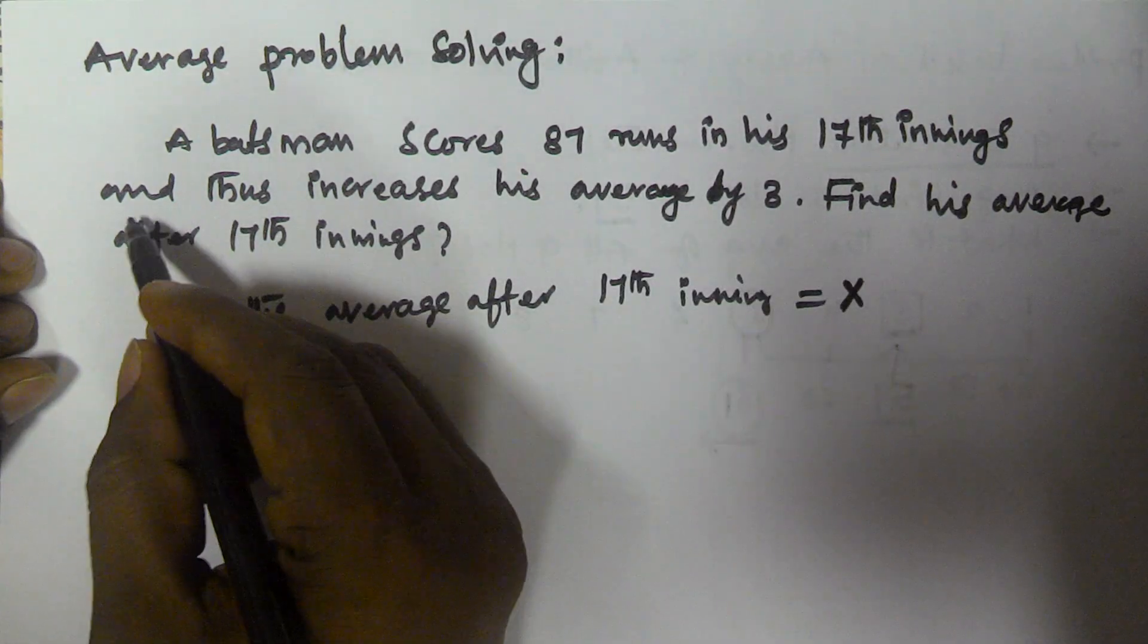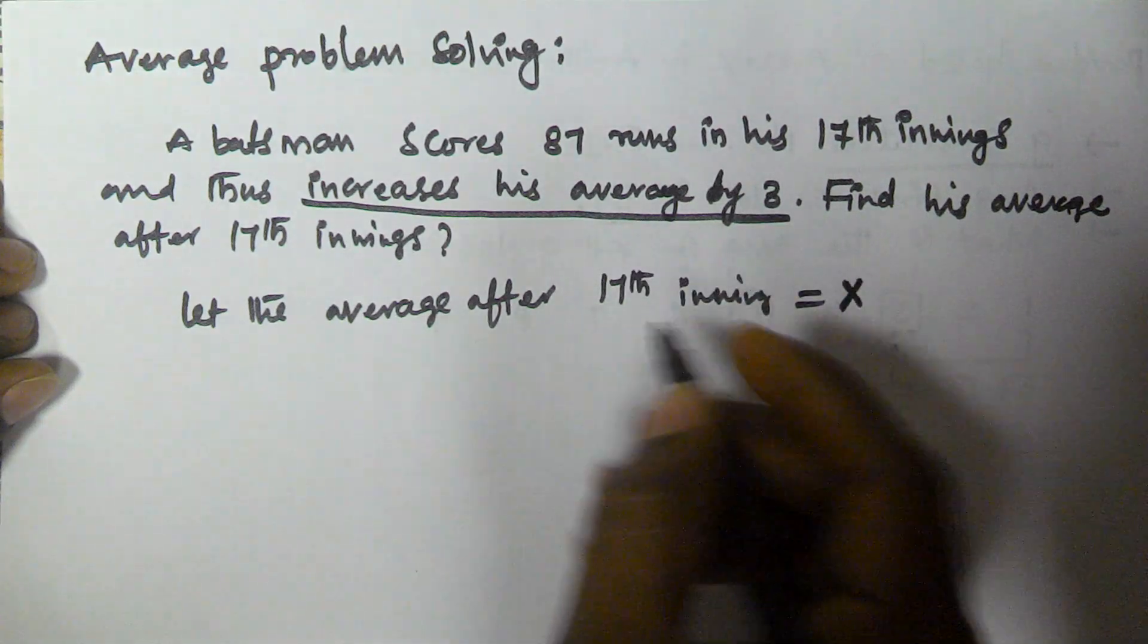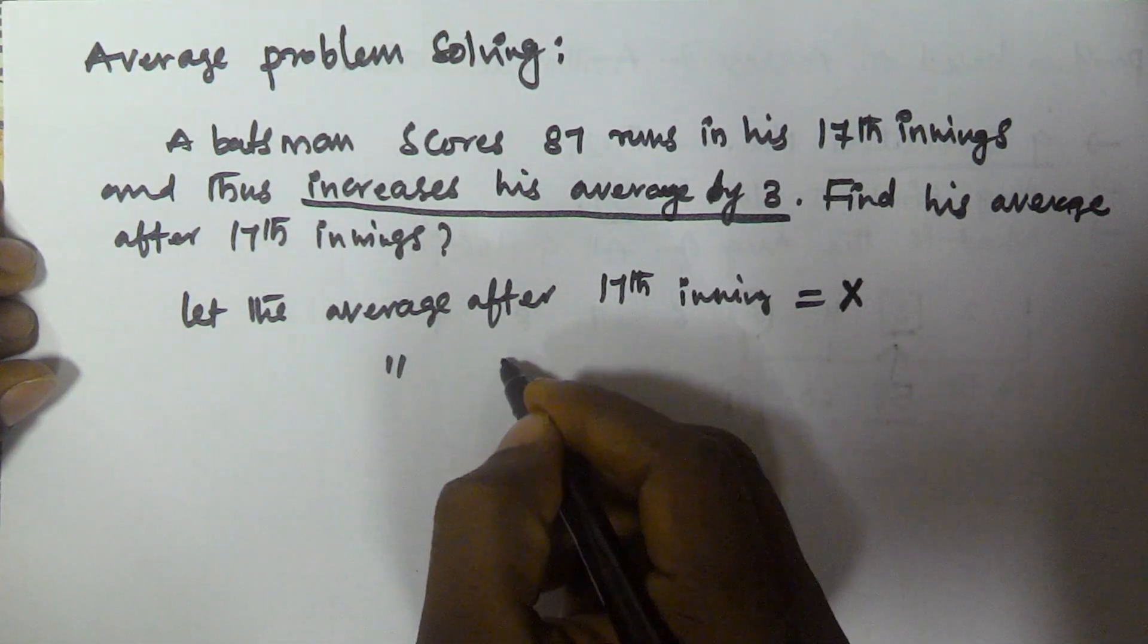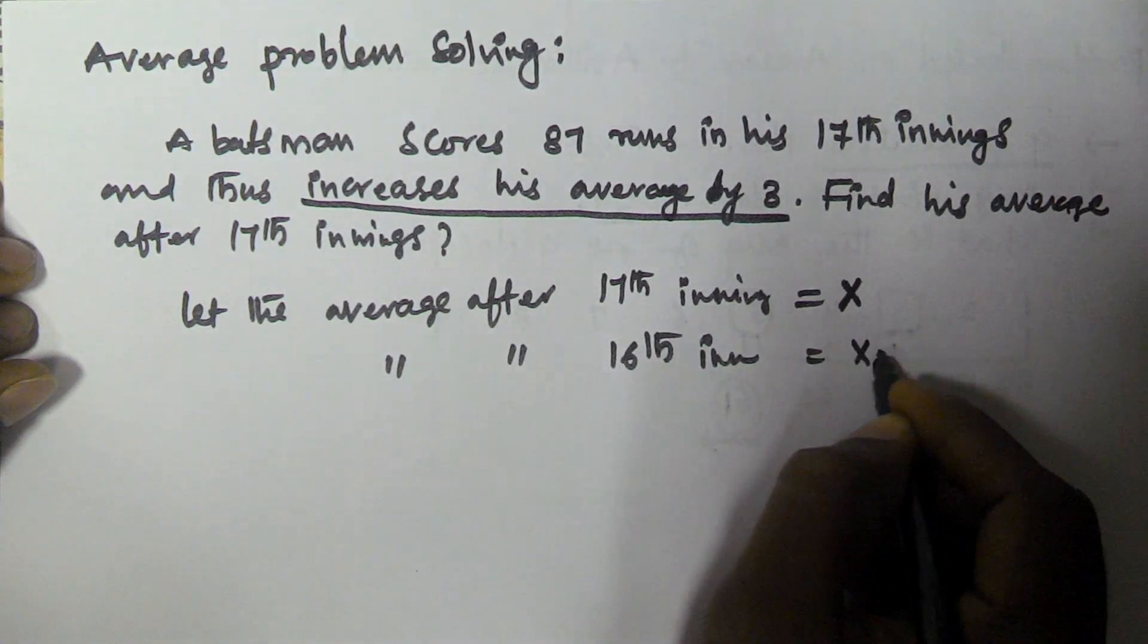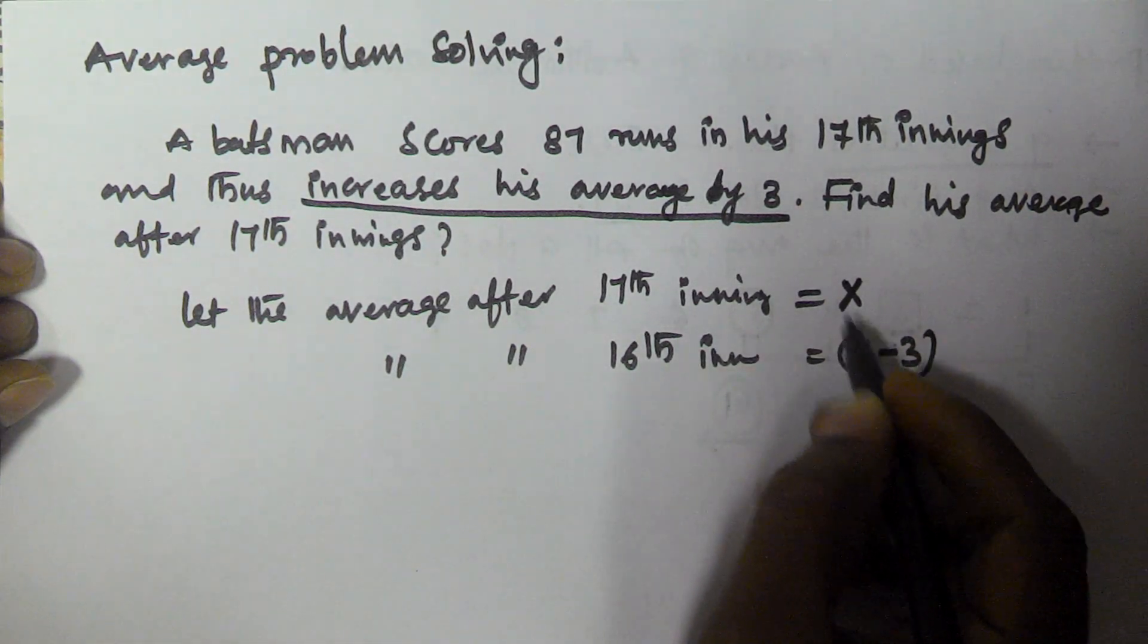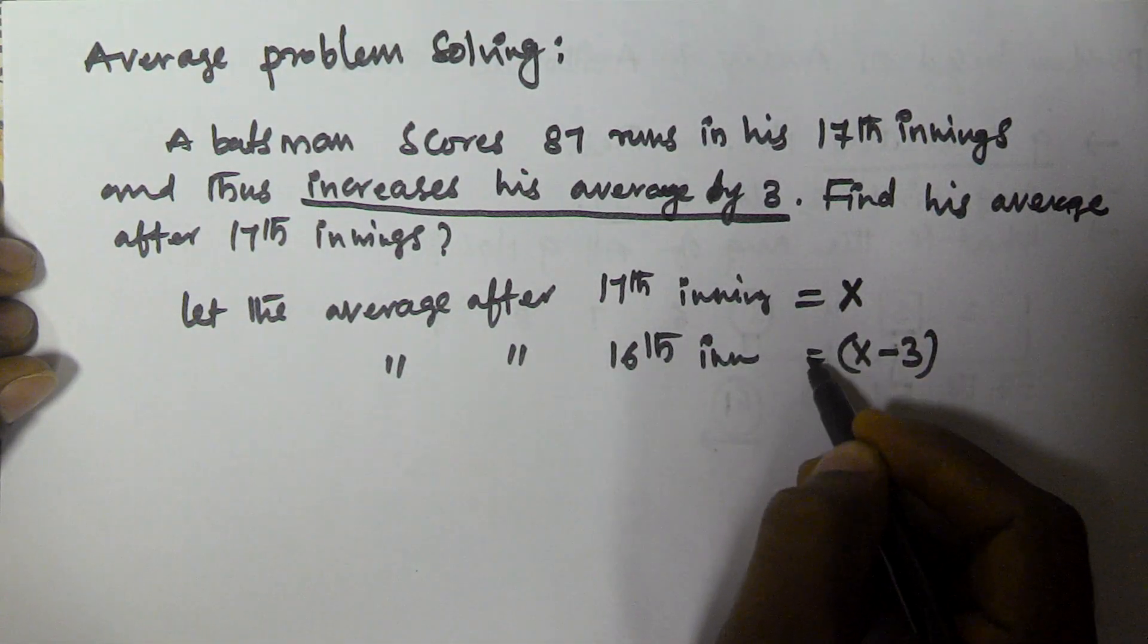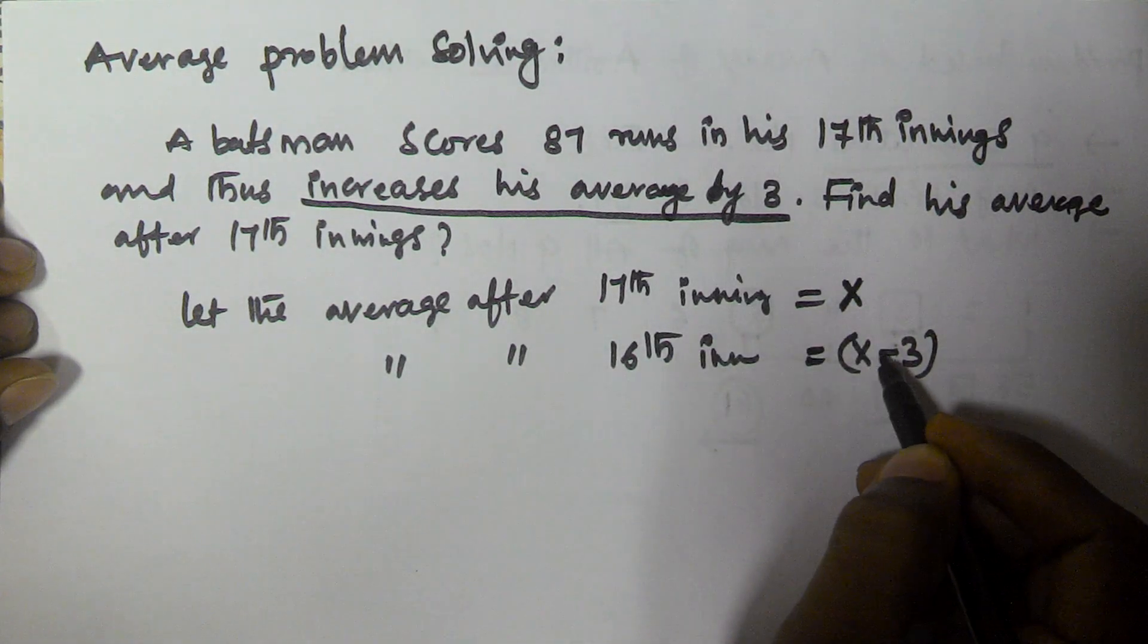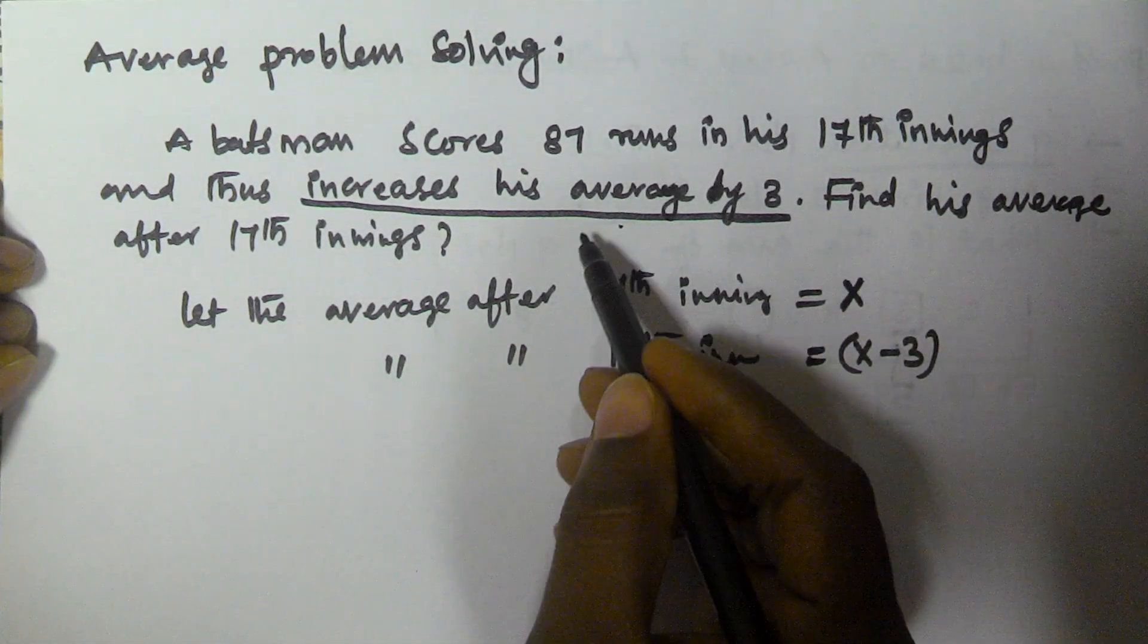So after 17th innings he increases his average by 3. That means the average after 16th innings is x minus 3.